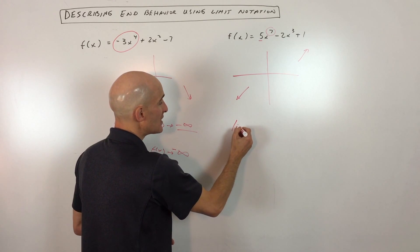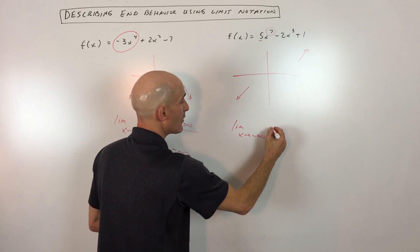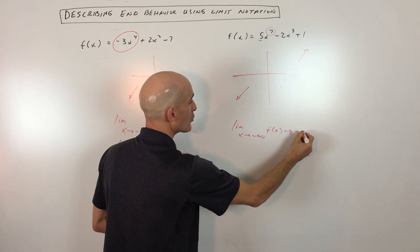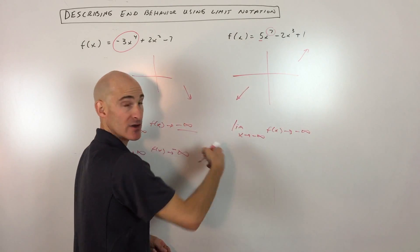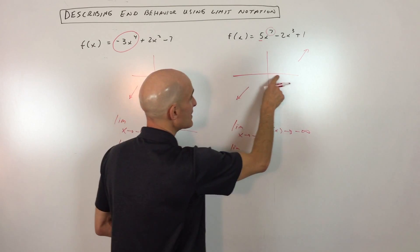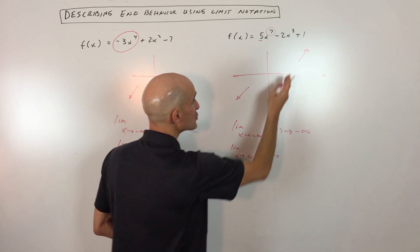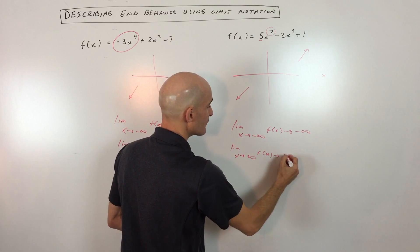But to write the notation in limit notation, we have the limit as x approaches negative infinity. That means as we're going to the left, the y values, f of x, approach negative infinity. They're going down to negative infinity. And then the limit as x approaches positive infinity, meaning as we're going to the right on the x-axis, the y values, f of x, approach positive infinity. It's going up towards positive infinity.